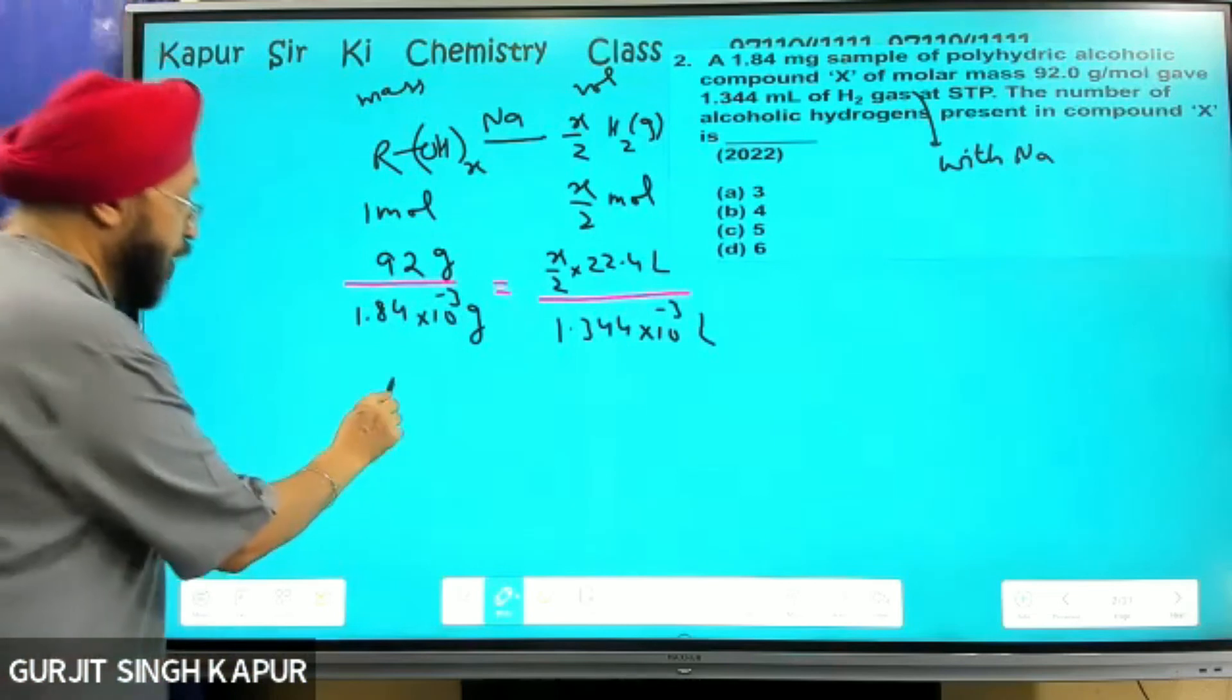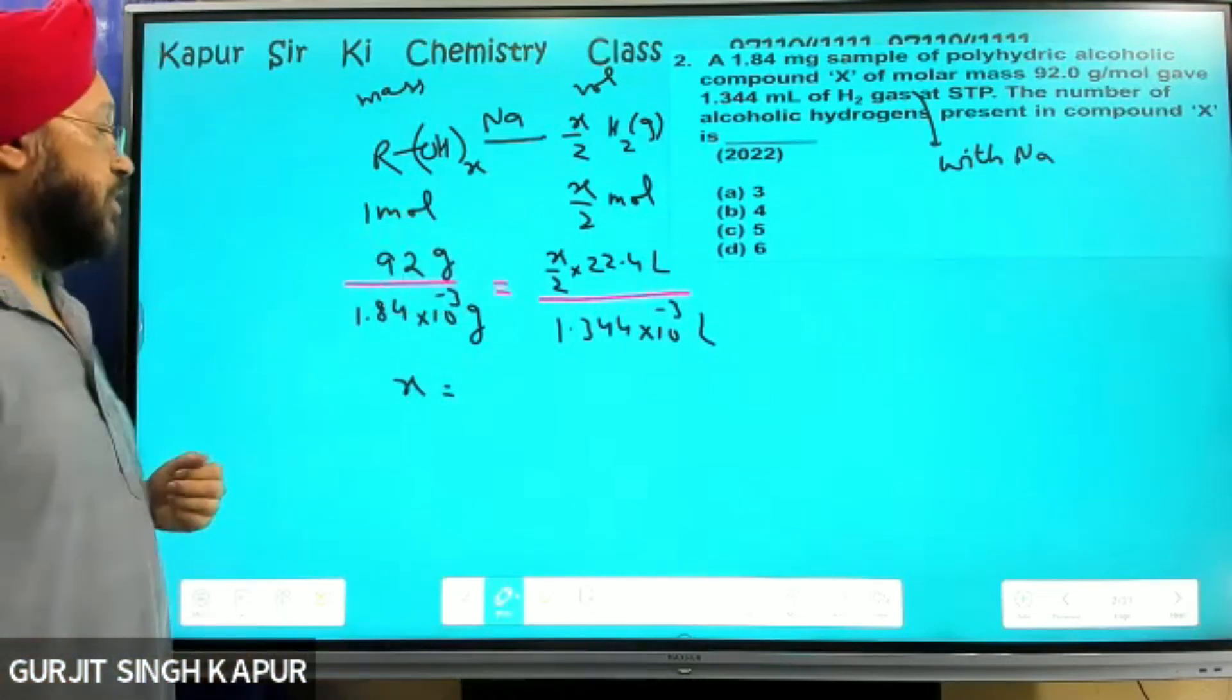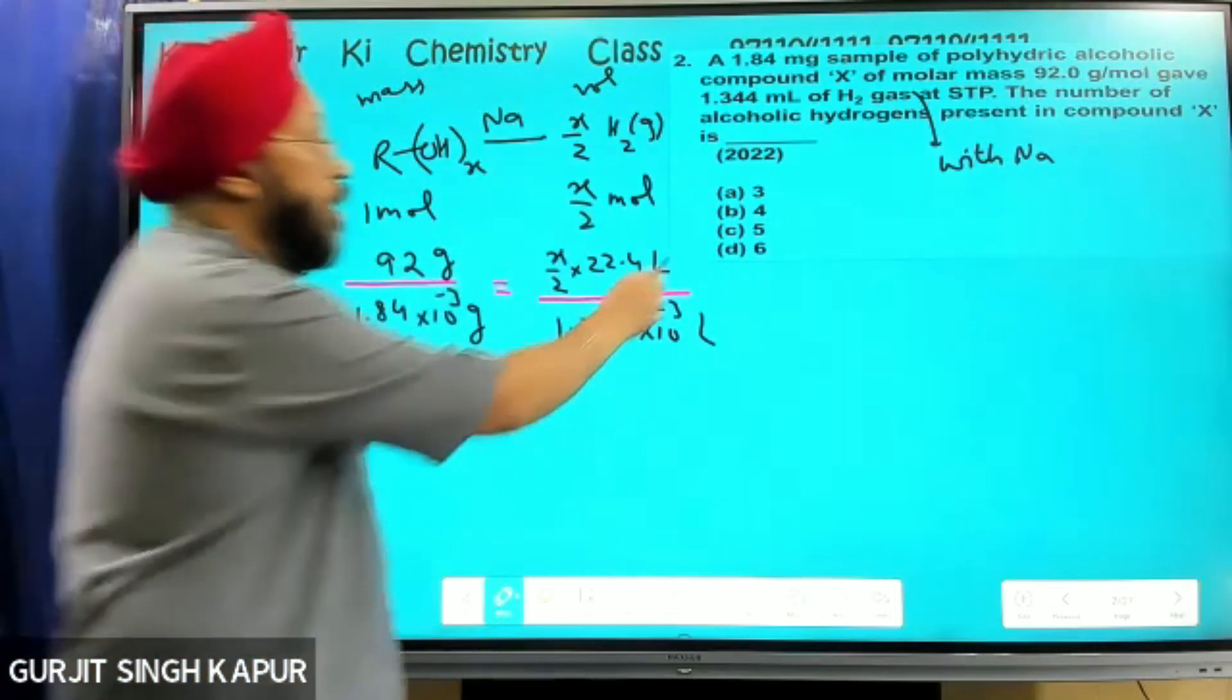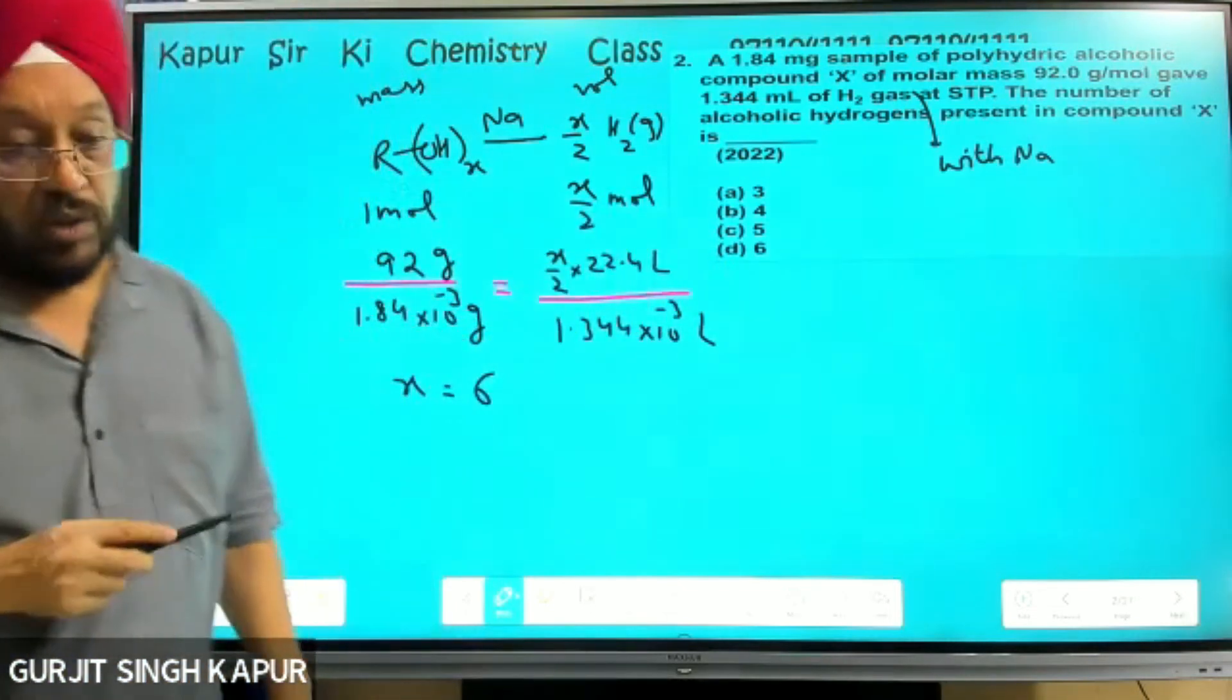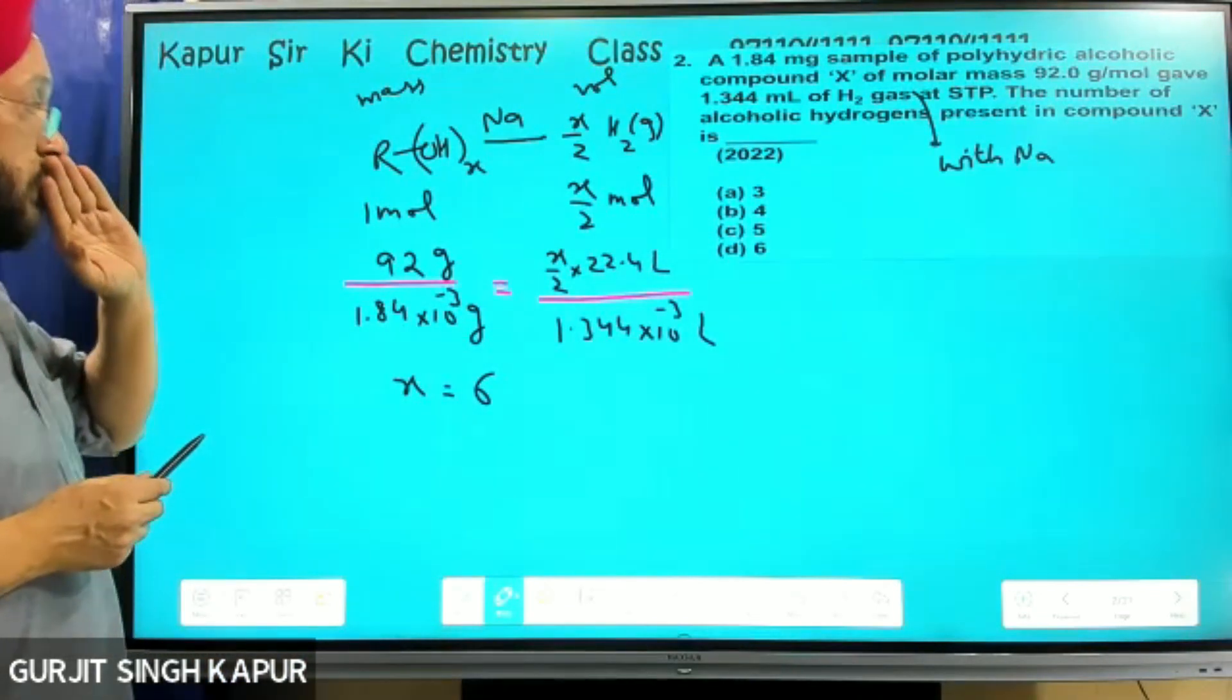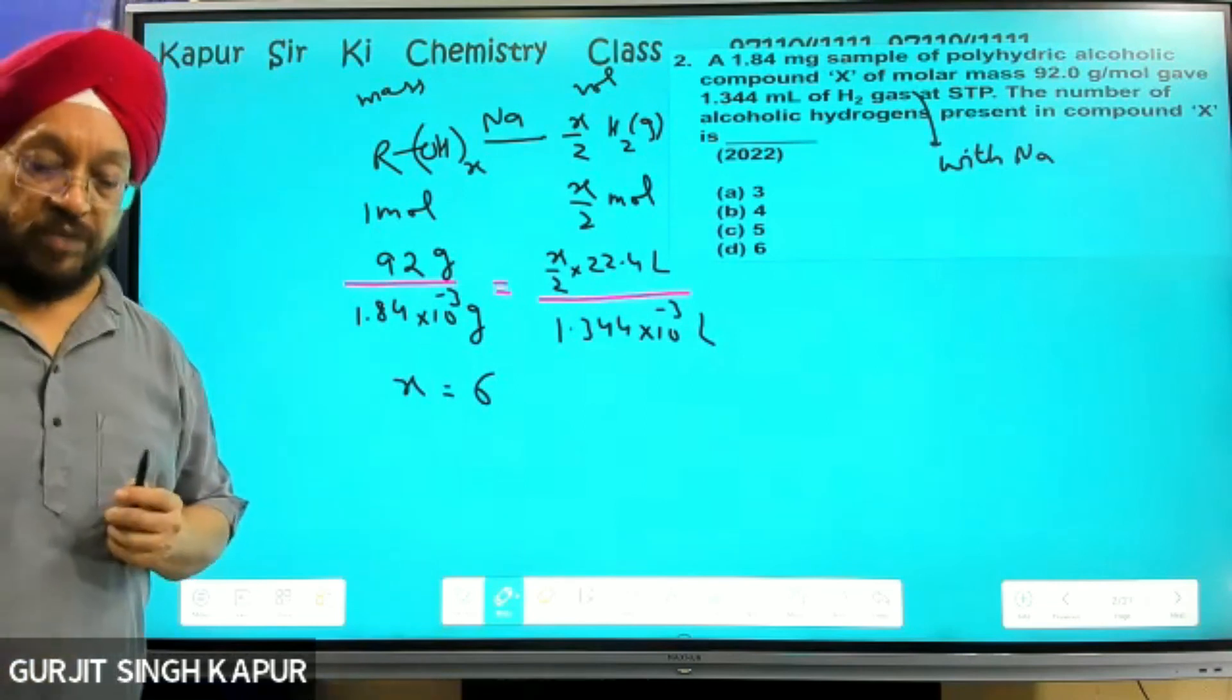Now find out the value of x. If we do the calculation, x comes out to 6. So hexahydric alcohol. Here is the result.